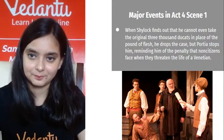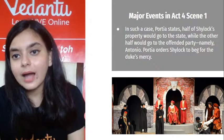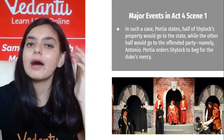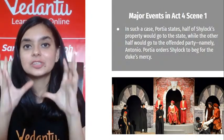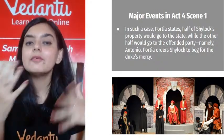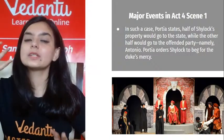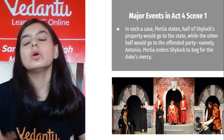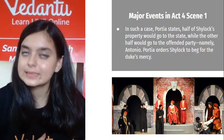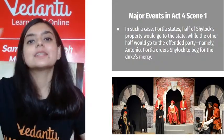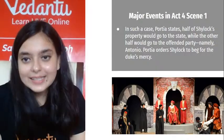Half of Shylock's property is going to be taken by the state, while the other half goes to the offended party — Antonio. Portia orders Shylock to beg for the Duke's mercy. The entire situation has become topsy-turvy: Shylock, who was in the dominant position and on whose mercy people depended, is now the one dependent on the Duke's mercy.